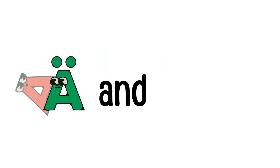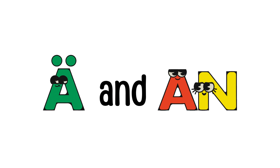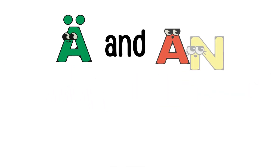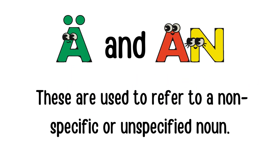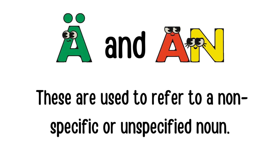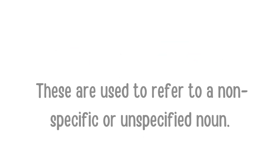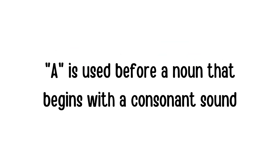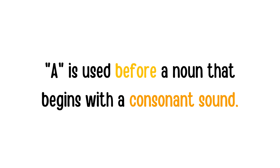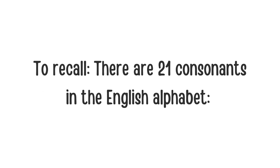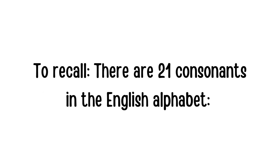Let's start with a and an. These two articles are used to refer to a nonspecific or unspecified noun. A is used before a noun that begins with a consonant sound. To recall, there are 21 consonants in the English alphabet.